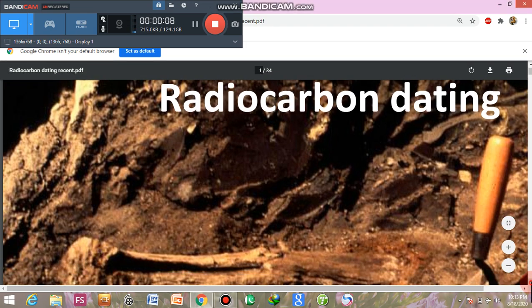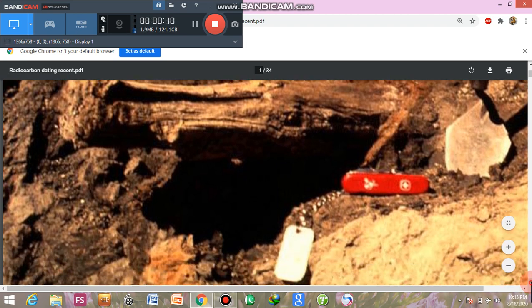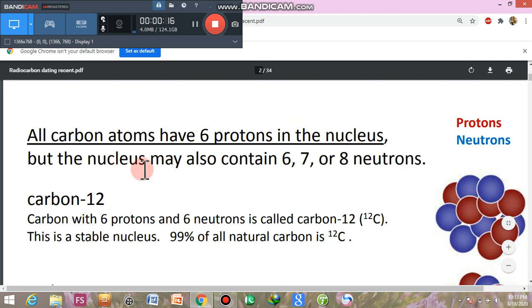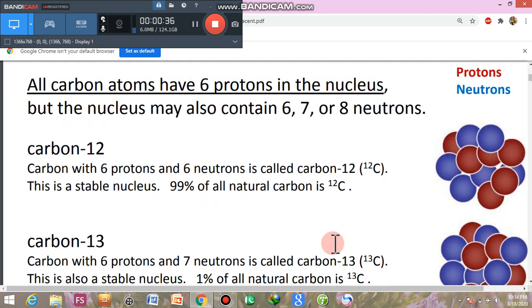All carbon atoms have 6 protons in the nucleus, but the nucleus also contains 6, 7, or 8 neutrons. Carbon-12 has 6 protons and 6 neutrons in its nucleus. You can write carbon-12 in this form. This is a stable nucleus. 99% of all natural carbon is present in carbon-12 form. Definitely the stable form becomes more in nature.